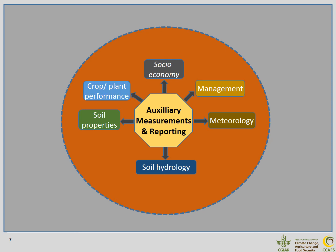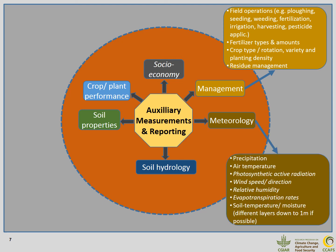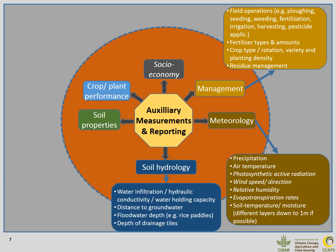The slide provides different examples of what should be observed and monitored. Management is particularly important, as management activities directly affect greenhouse gas fluxes from the soil—these include field operations like plowing, seeding, and weeding, as well as application of fertilizers or irrigation. We should also know meteorological parameters, meaning temporal changes in precipitation, air temperature, and other variables. Additionally, we should observe soil hydrology, for example with regard to water infiltration, distance to groundwater, or floodwater depths.